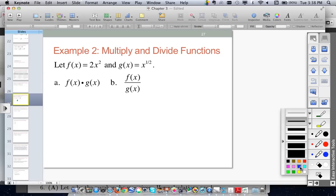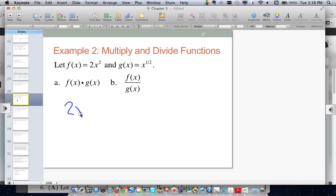So when we multiply, so we're just taking f of x, which now we have said is 2 times x squared, and we're going to multiply this by x to the 1/2. So basically, this is like saying 2 times x squared times x to the 1/2.